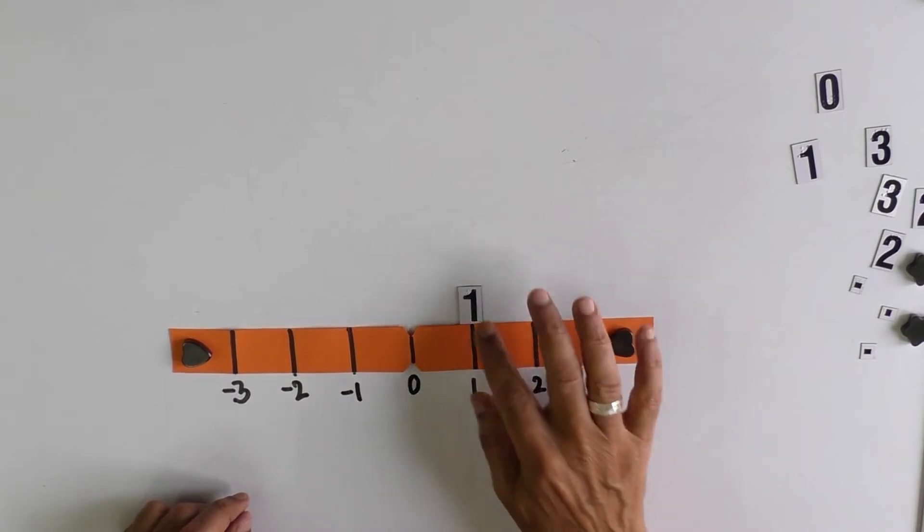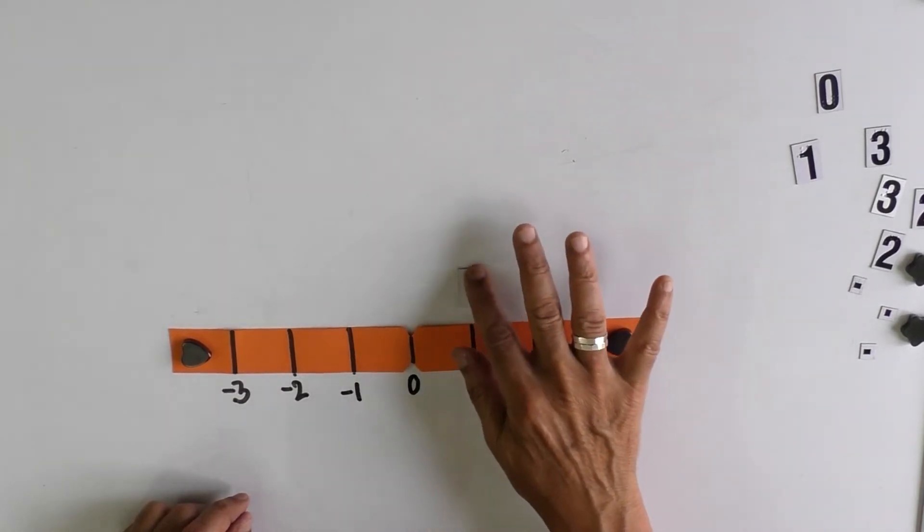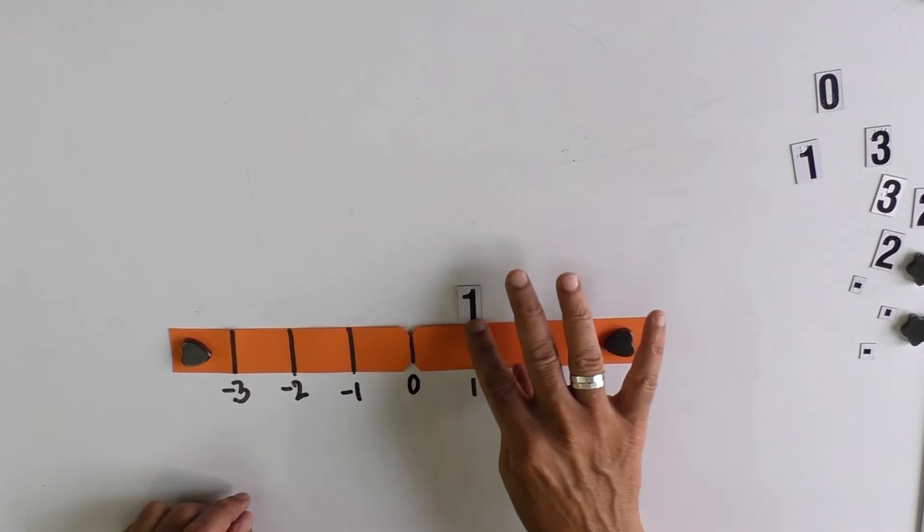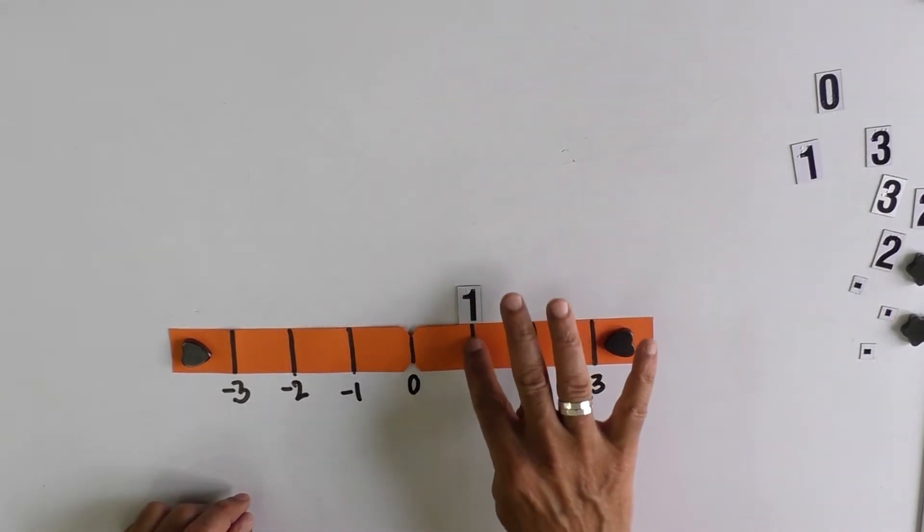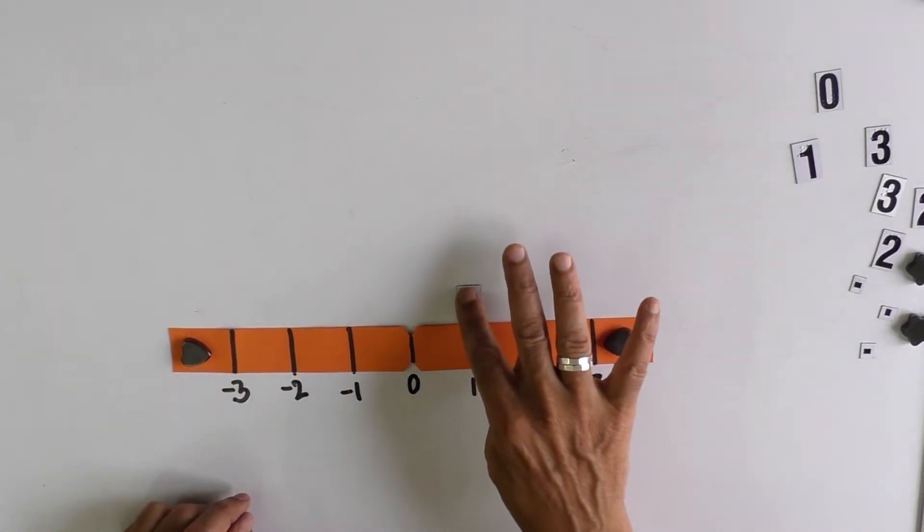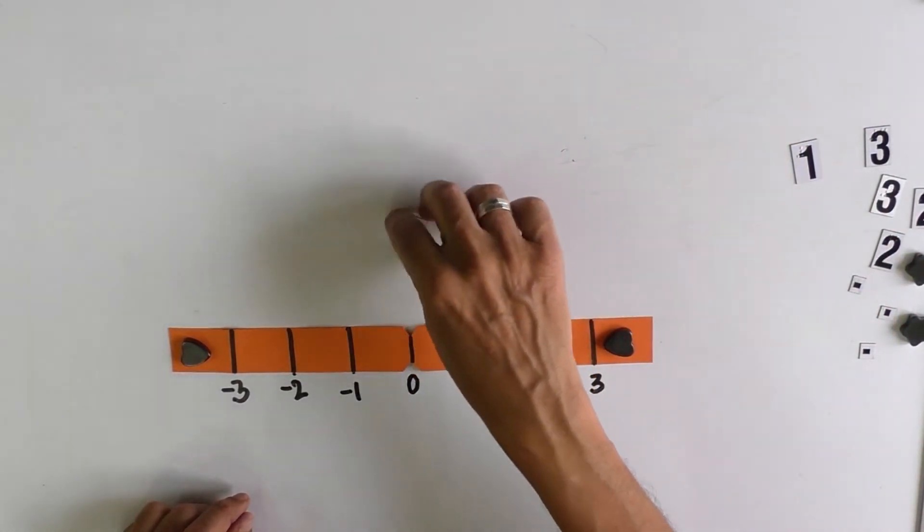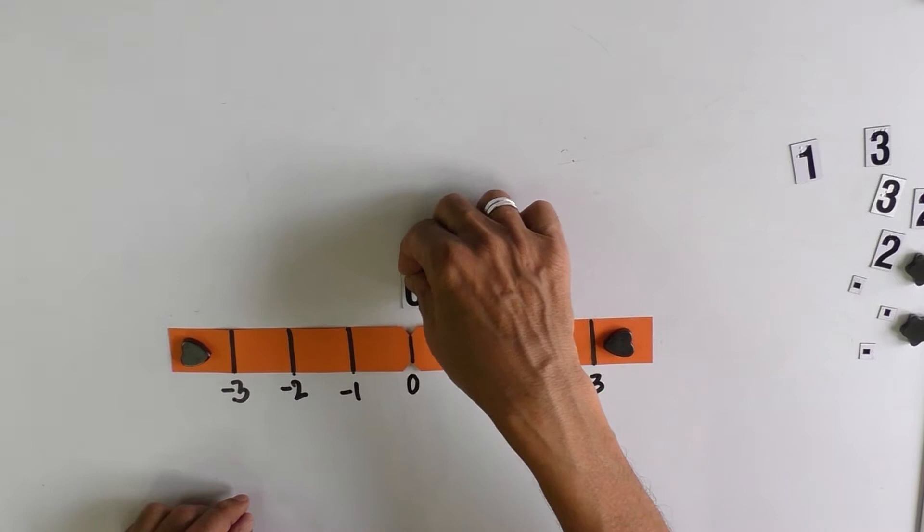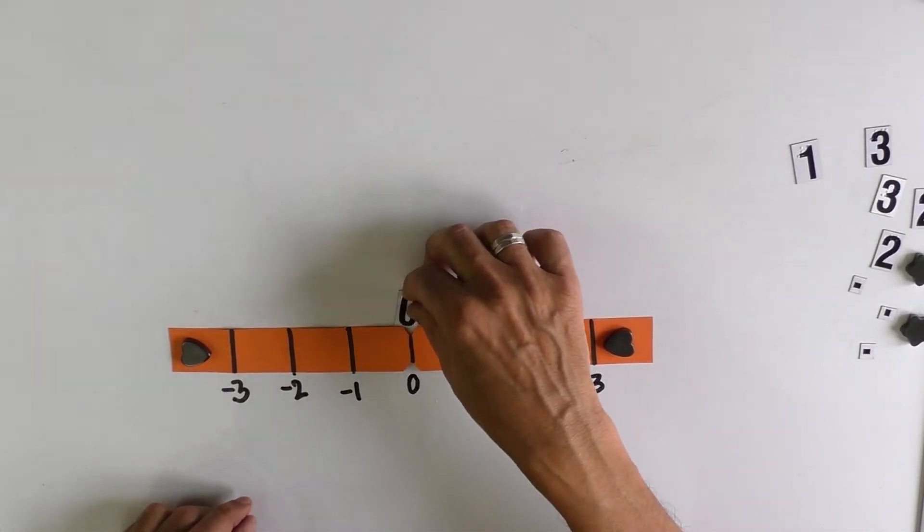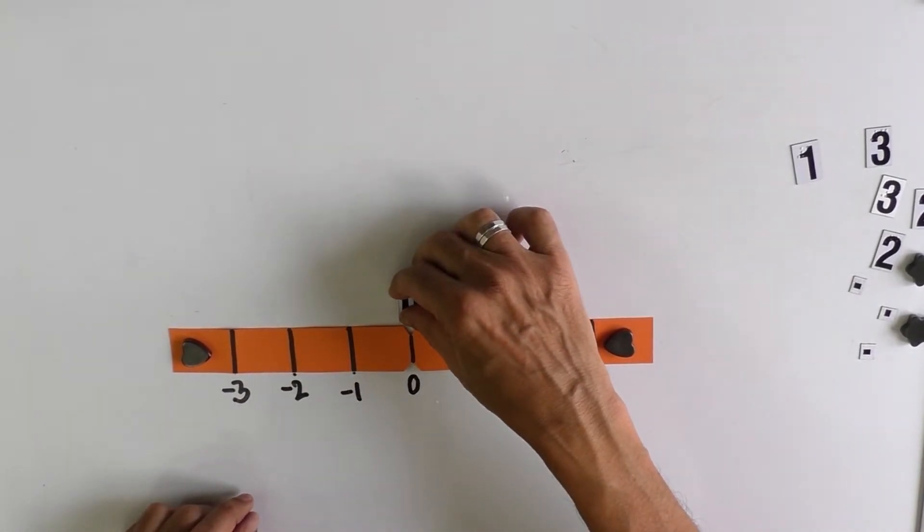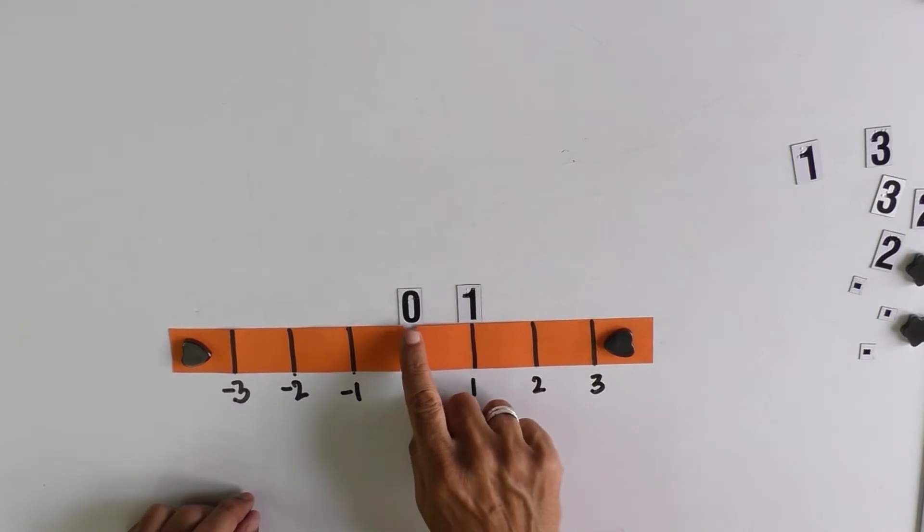So you can bring the numbers with braille markings. Now this number has braille markings 1, and this is tactile in nature. You ask the child to put 1 there and 0 in the middle.